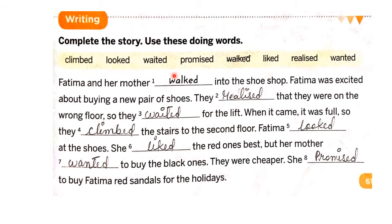We need to fill these words into the paragraph. Fatima and her mother — number one: walked into the shoe shop. Fatima was excited about buying a new pair of shoes. They — number two: realized — that they were on the wrong floor. So they — number three: waited — for the lift. When it came, it was full. So they — number four: climbed — the stairs to the second floor.